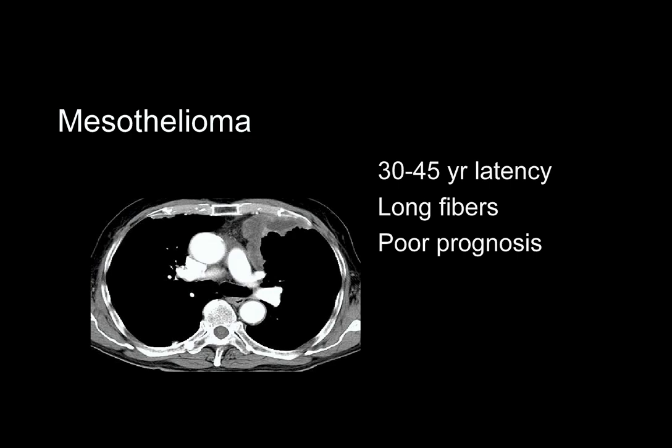Mesothelioma is a rare pleural malignancy seen with asbestos exposure. Curiously, in contrast to this example, the majority have no plaques. Long, thin fibers are more likely to induce mesothelioma; thus, crocidolite is more neoplastic than chrysotile. The hemithorax is usually small, pleural effusion is nearly universal, and prognosis is poor with a 12-month median survival.